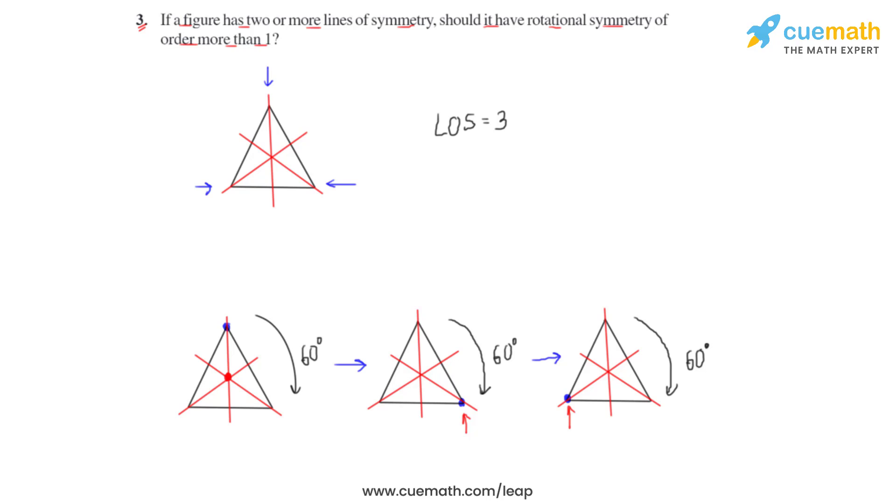We can say that the first figure has been rotated thrice by an angle of 60 degrees each time, so that we can say that the order of rotational symmetry is 3 for this particular equilateral triangle.